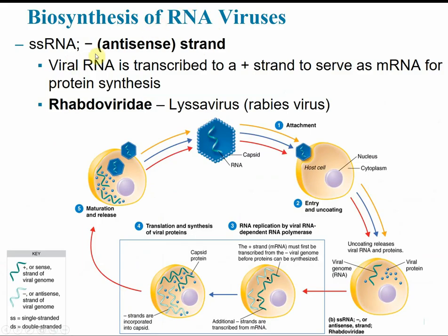Single-stranded RNA negative antisense strand viruses have the same sequence as tRNA, so they cannot directly undergo translation. A positive strand must first be transcribed to serve as mRNA for protein synthesis. Starting with the negative strand, a positive strand is made, and then we go back and forth making template strands until we have all the proteins and copies needed for new viruses. An example of a single-stranded RNA negative antisense virus is rhabdoviridae, the rabies or lyssavirus.